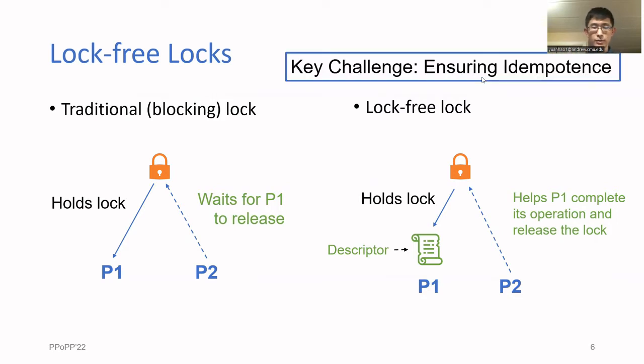The key challenge when implementing lock-free locks is executing the descriptors idempotently. This is because the same descriptor could get executed once by the original process and many more times by processes trying to help it. Idempotence basically just means that no matter how many times it gets executed, it should appear to only happen once.